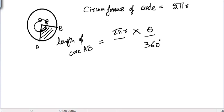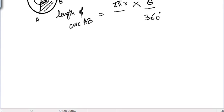The angle is 30 degrees and the radius is 10 centimeters. The length of arc AB would be equal to 2